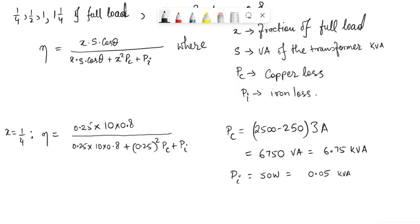Now if I substitute this, we will directly substitute pc and pi. pc will be 6.75 and pi will be 0.05, so that will give us, for x equals 0.25, it will be equal to 80.91%.